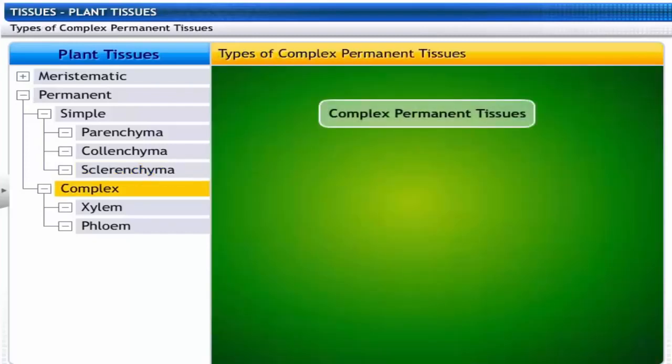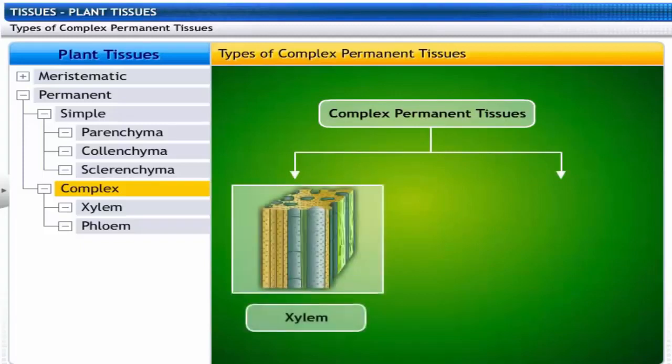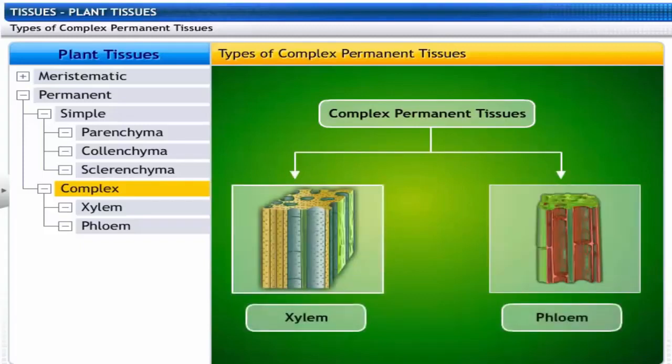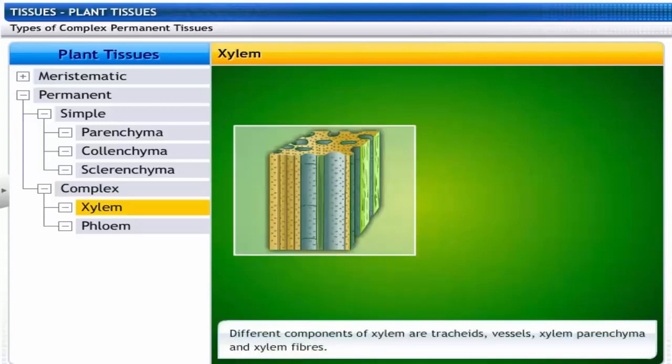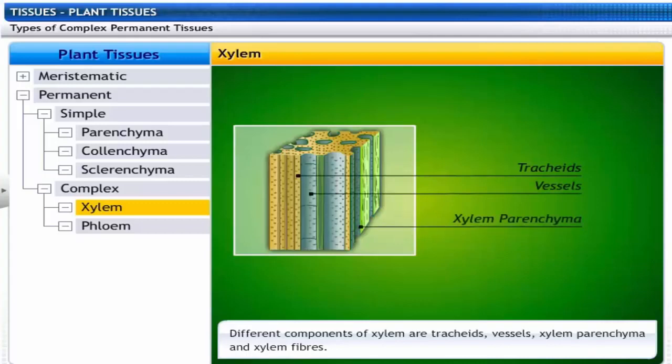Complex permanent tissues are made of more than one type of cells that coordinate together to perform a common function. These are of two types: xylem and phloem.